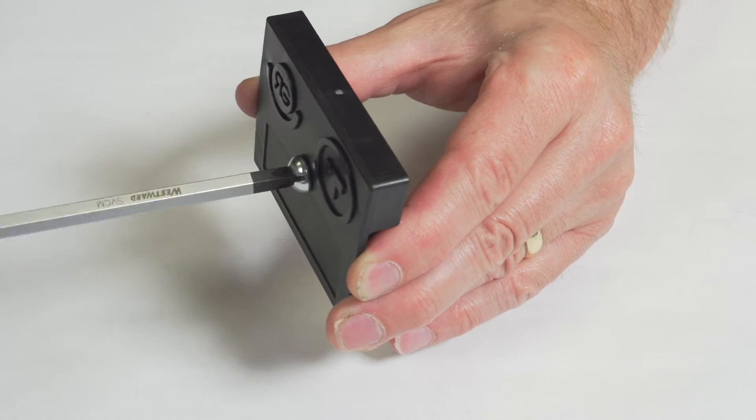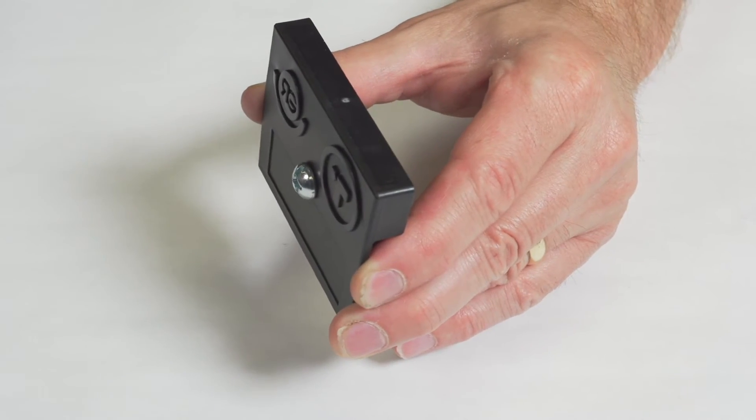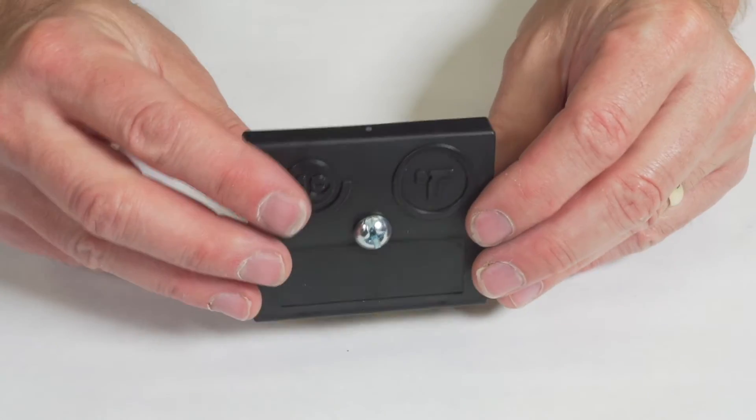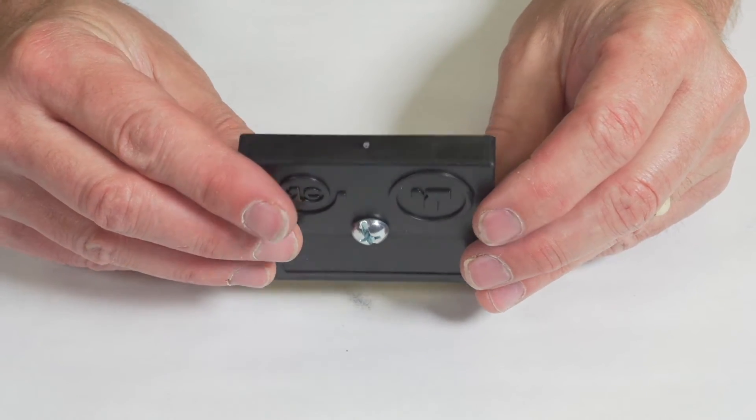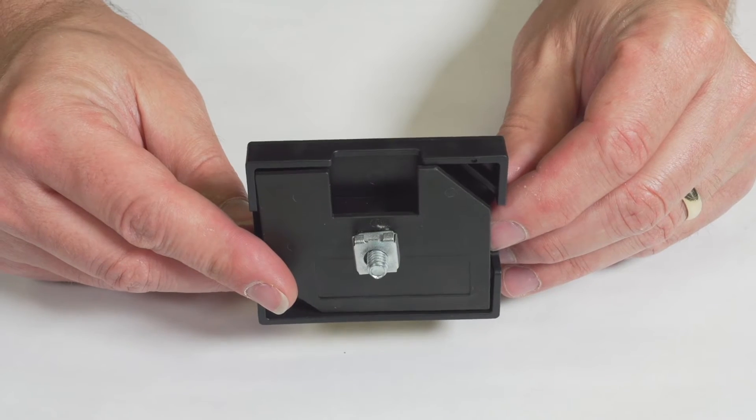Once installed, the fastener is hidden, but the head of the screw is visible, making this a serviceable joint. The strength of the joint is comparable to traditional mechanical fasteners.